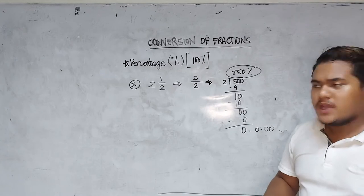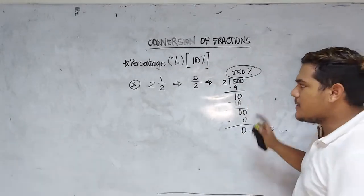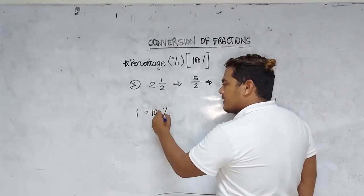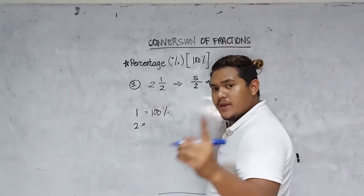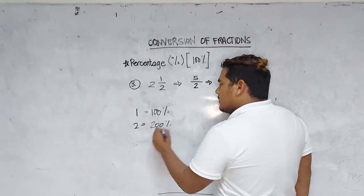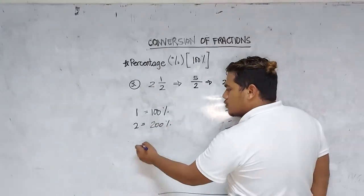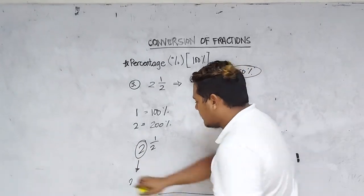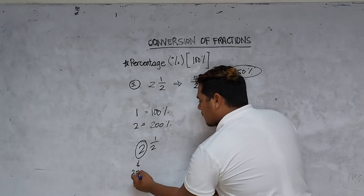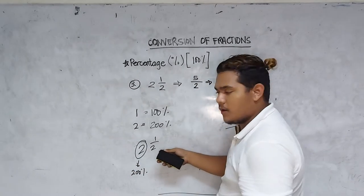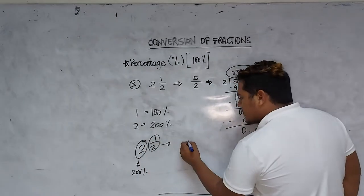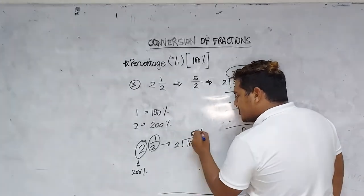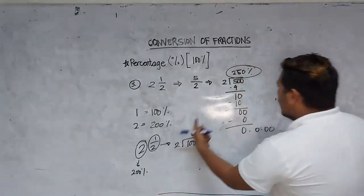Why is it 250% and not 25% or 50%? Basically, because if 1 is a whole number fraction, it is already equivalent to 100%. If 2 is a whole number, it is already equivalent to 200%. So for the mixed fraction 2 and one-half: the 2 contributes 200%, and one-half converted into percentage is 100 divided by 2, which is 50%. So 50% plus 200% equals 250% — it is above the perfect percent.